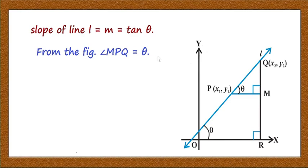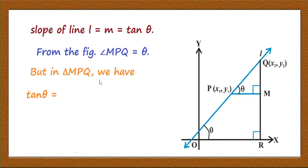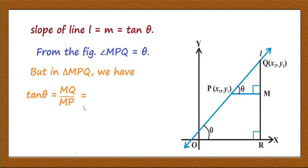From the figure, angle MPQ is also equal to theta because PM is perpendicular to line QR, and therefore PM is parallel to the x-axis. So this angle is also equal to theta, and therefore angle MPQ = theta. Since PMQ is a right angle triangle, from triangle MPQ we have tan theta = opposite side divided by adjacent side.